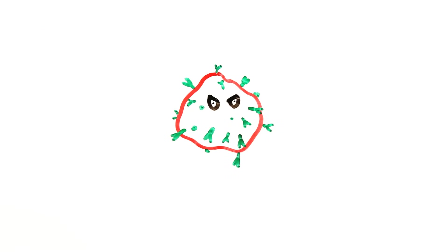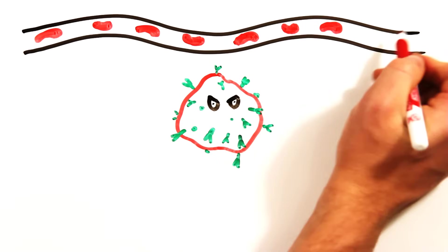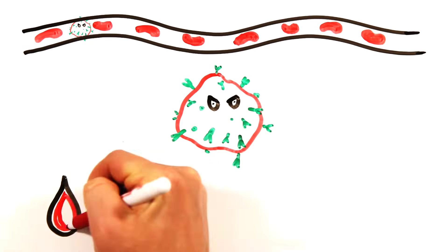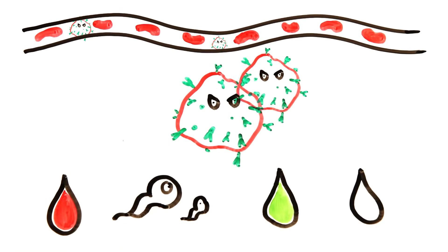To contract HIV, the virus must enter the bloodstream, and it's often transmitted from infected bodily fluids like blood, semen, vaginal fluids, or breast milk.